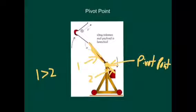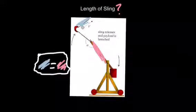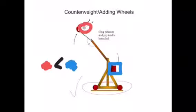The pivot point should be closer to the counterweight than to the payload. In this diagram, one is greater than two. This will allow the payload to have a higher linear velocity than the counterweight. The sling length can vary, but I personally think designers should make the sling length equal to the long arm. The counterweight should weigh much more than the payload because it pivots around a shorter distance.